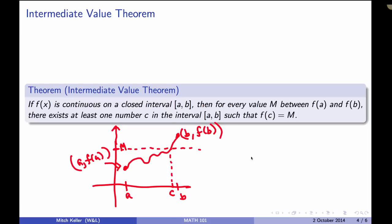Now, maybe there's lots of them. Maybe the graph instead does that, and this is our m level, and here's our a, and here's our b. So maybe there are lots of values c. All we know is that there exists at least one number c, and the theorem itself doesn't actually tell us how to find c. It's what we call an existence theorem. It tells us it's there, it doesn't tell us how to find it.